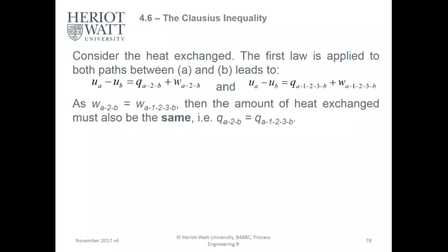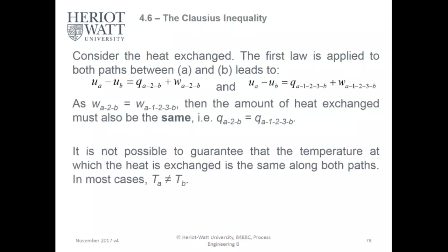If you go ABC or ADC, you go through the same amount of distance and always get the same amount of energy, so it's effectively a vector. It is not possible to guarantee that the temperature at which heat is exchanged is the same along both paths, so the temperature exchange might not be the same but the energy is.